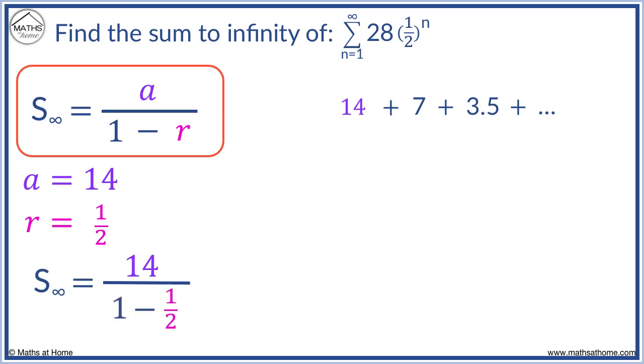The sum to infinity equals 14 over 1 minus 1 half. 1 minus 1 half equals 1 half, and 14 divided by 1 half equals 28.